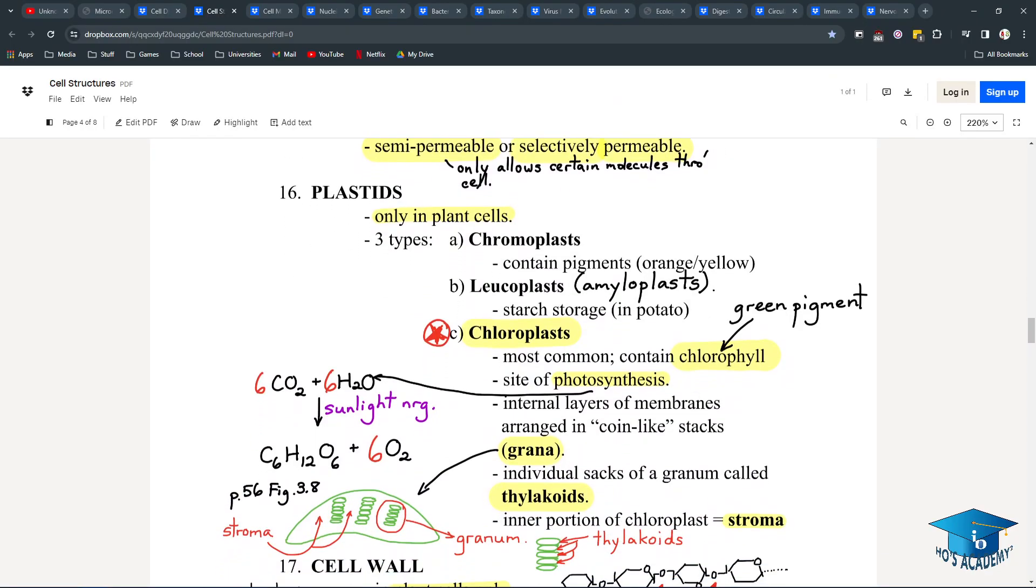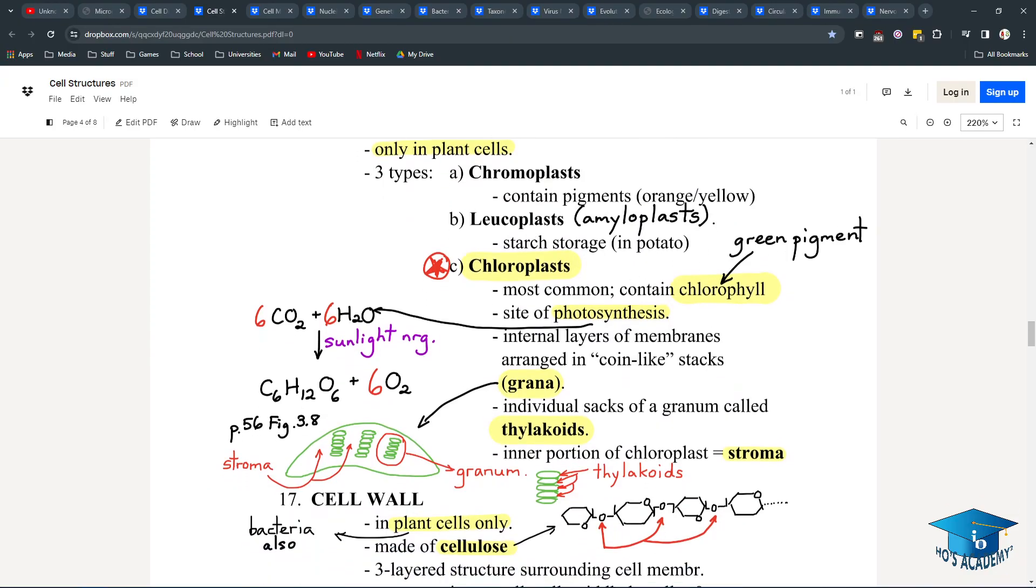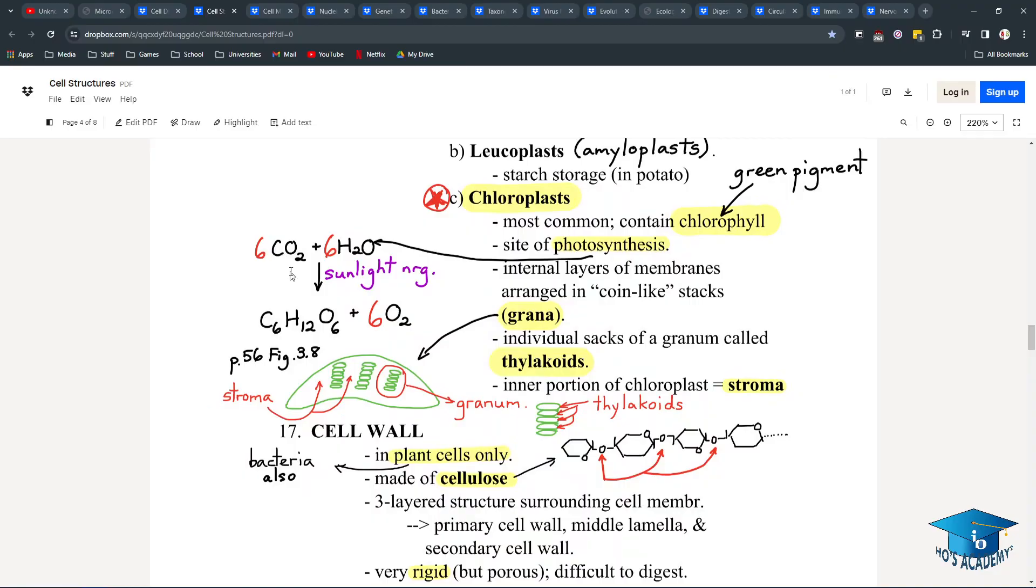Plastids are only found in plant cells. There are chromoplasts, leukoplasts, and chloroplasts. Chromoplasts, chromo like color, contain pigments for orange and yellow. Leukoplasts, stuff in a potato, are for starch storage. And chloroplasts are the most common, they have chlorophyll, which is the green pigment. But more importantly, it's for photosynthesis. It converts water, carbon dioxide into glucose and oxygen for us. The coin-like stacks are the grana, and individual coins are thylakoids. Space in between are called stroma.